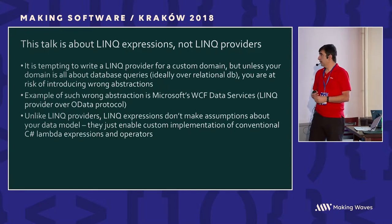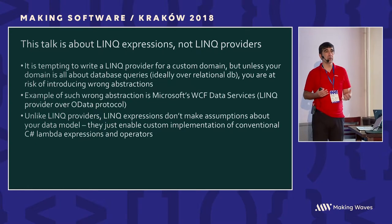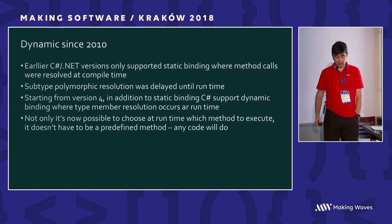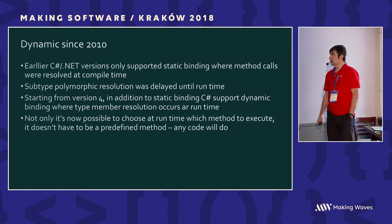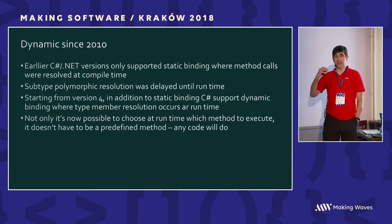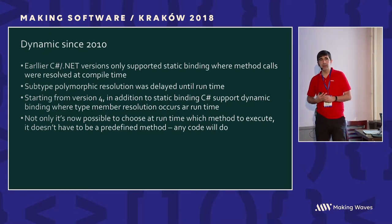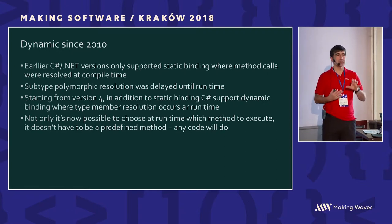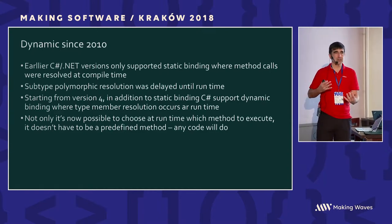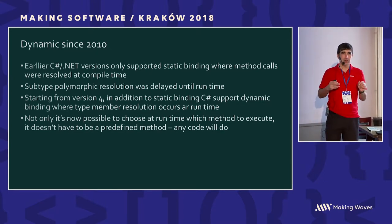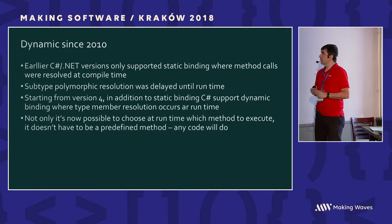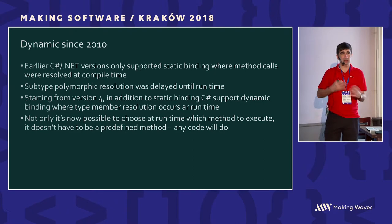Unlike LINQ providers, LINQ expressions don't make any assumptions about your underlying data model. You use idiomatic C-Sharp expressions to send into your API. In addition, since 2010, C-Sharp has been supporting dynamic elements — which came as a radical addition. It was driven by integration with things like COM objects and Excel, so instead of using proxy classes or hard-coded strings, you could write code that looks like part of the language but was dynamically evaluated.